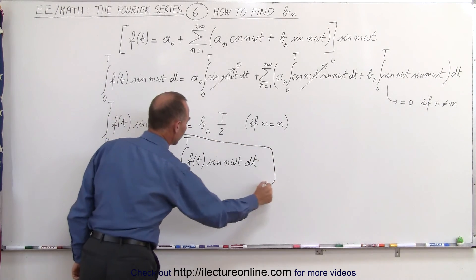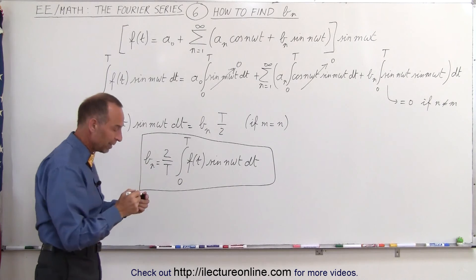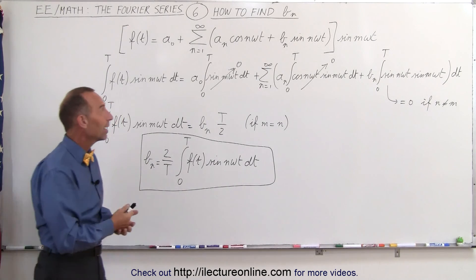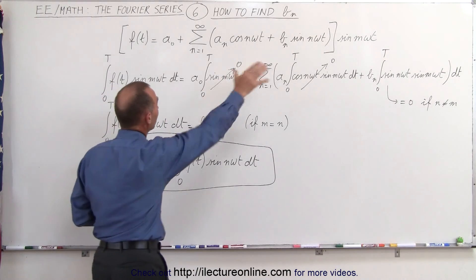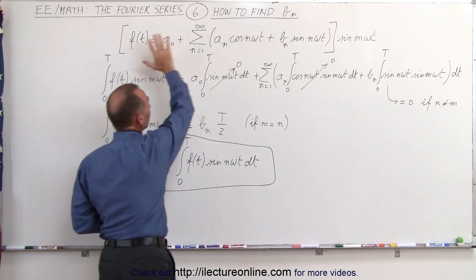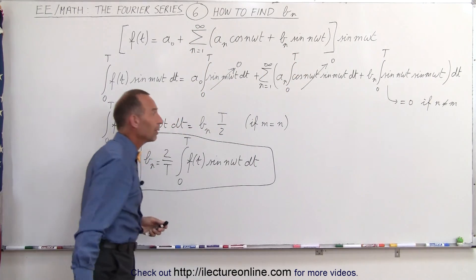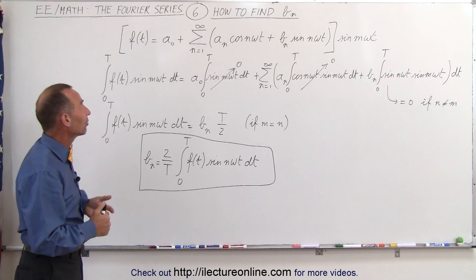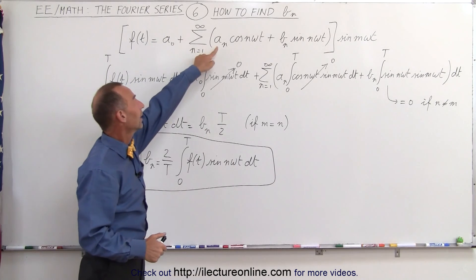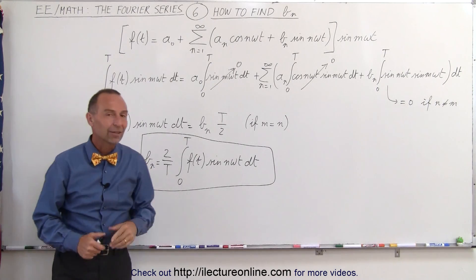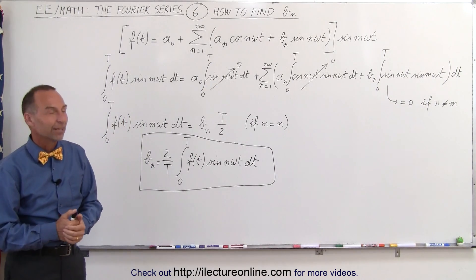And realizing that since m is equal to n, I can replace m over here by the n down here. So this now will become the equation that allows us to solve for all the b sub n's in the infinite summation of sines, sine functions, which then represent the original f of t, which is in the time domain here, then converted into the frequency domain in terms of the Fourier series. But again, it all comes down to finding the a sub 0's, the a sub n's, and the b sub n's, and this is the equation on how to calculate the b sub n's. That's how it's done.